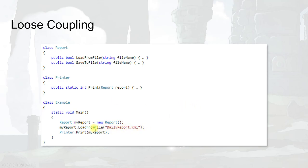In one example we have a Report class and a Printer class. We create a report object, call load from file on it to load the file, and then ask the printer to print that loaded file. Here the structure is clear — the printer is printing and the report can load and save.